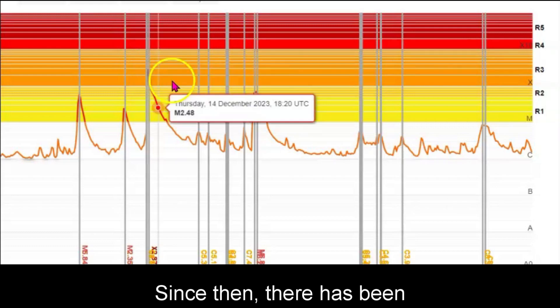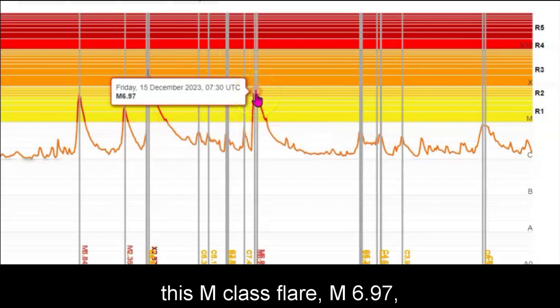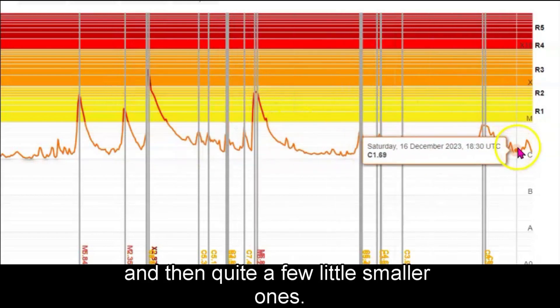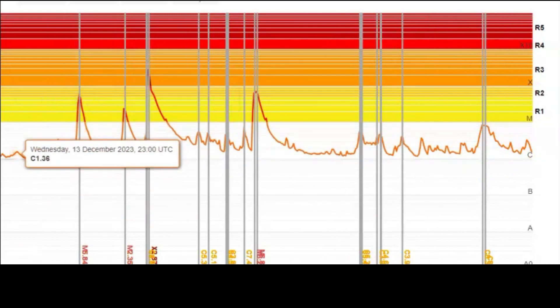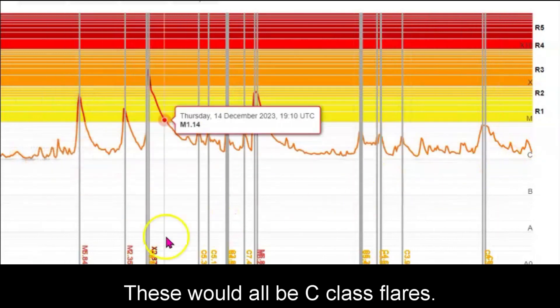Since then, there has been this M class flare, M6.97, and then quite a few little smaller ones. These would all be C class flares.